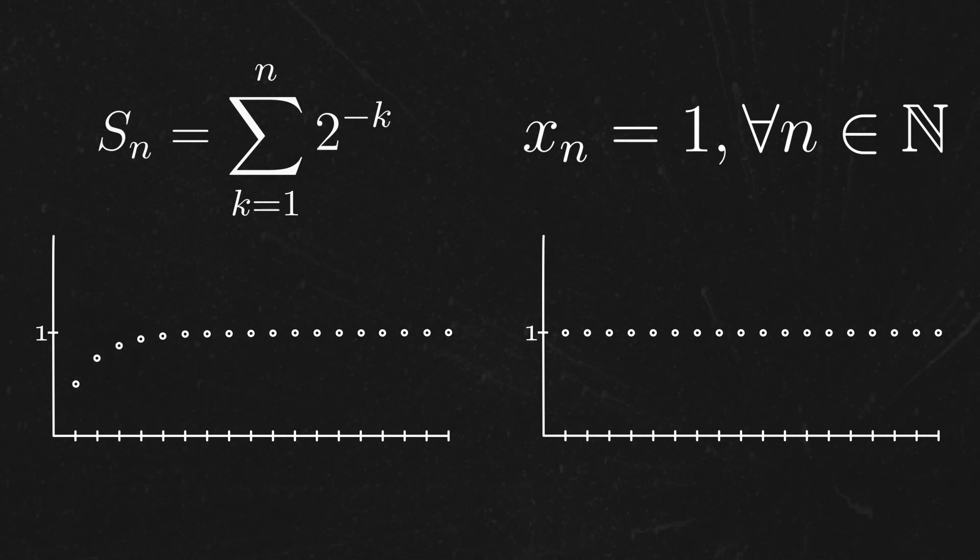But again, we can't just say that we'll consider two sequences to be the same if they converge to the same number, because that number might be irrational, and we still haven't defined those yet. So yet again, we need to search for a way to express this idea that's intrinsic to the terms of the rational sequences themselves.